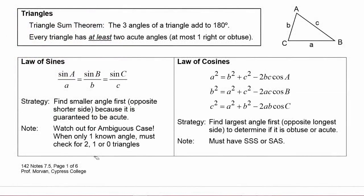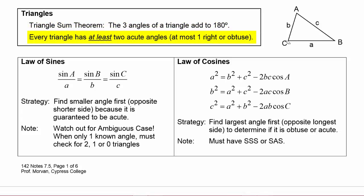In solving applications of vectors, you will be using triangles all over the place, so let's review the triangle sum theorem. The three angles of a triangle have to add up to 180 degrees — angle A plus angle B plus angle C equals 180. Also, every triangle has at least two acute angles; the most it can have of right or obtuse angles is one, and that becomes important in our triangle-solving strategies.